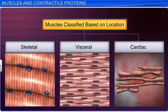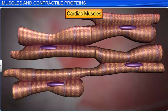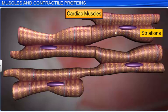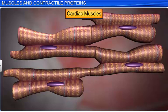The third type of muscle is the cardiac muscle, which is found only in the heart. Cardiac muscle cells are branched, striated, involuntary, and contain a single nucleus. Several cardiac muscle cells assemble in a branched manner to form a cardiac muscle.